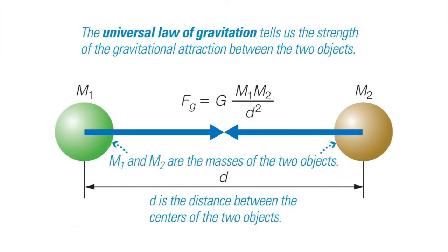Newton's universal law of gravity has a very simple mathematical form. It says that the force between any two objects equals a constant of nature — the gravitational constant — times the mass of the two objects divided by the square of the distance between them. It's a simple equation that says the force is proportional to each of the masses, and inversely proportional to the square of the distance between them.